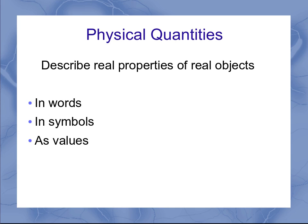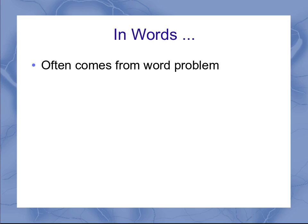We describe them in words, in symbols, and also as values. Starting with in words, this often comes from the word problem itself. As an example, the problem might talk about the mass of an object or the position of that particular object.